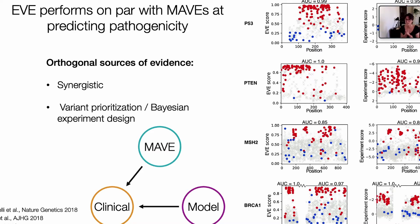This was really exciting for us because MAVEs and the model trained only on sequences across evolution are completely orthogonal sources of evidence. So they can be used in combination and synergistically — not just to classify variants of uncertain significance, but also, as Jacob Kitzman was talking about yesterday, by looking at the agreements and disagreements to identify which variants should be looked into more carefully. This idea of variant prioritization and Bayesian experiment design is something we're very excited about, especially when we want to build experiments to test epistasis. So if you're interested in this, please get in touch.